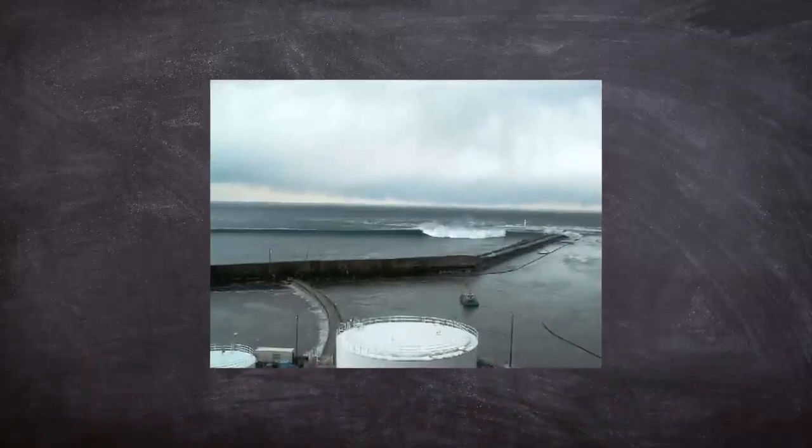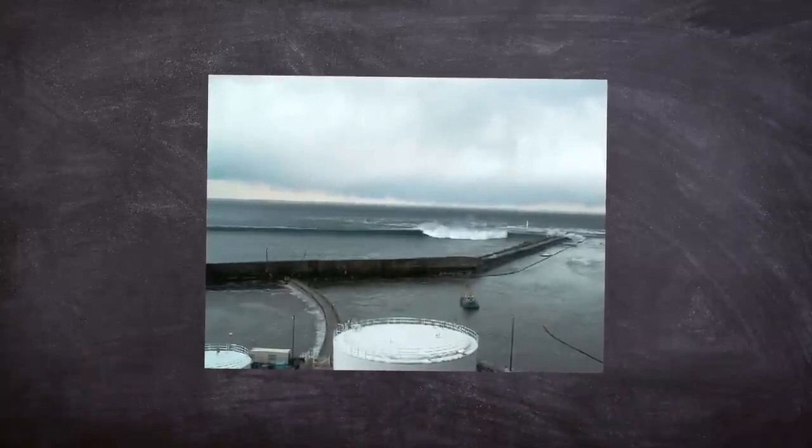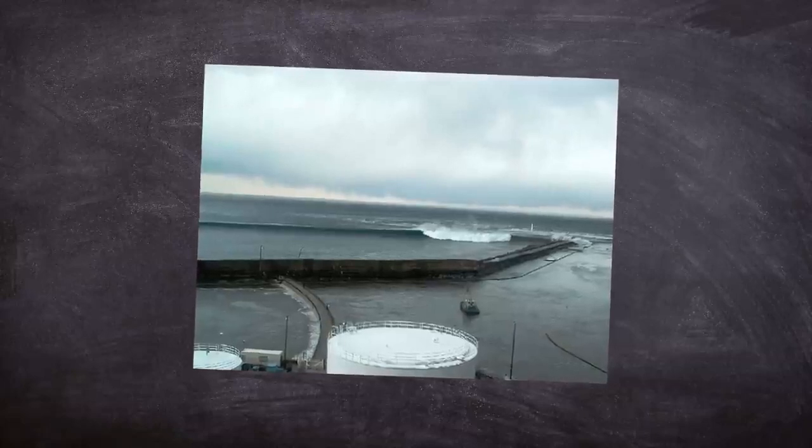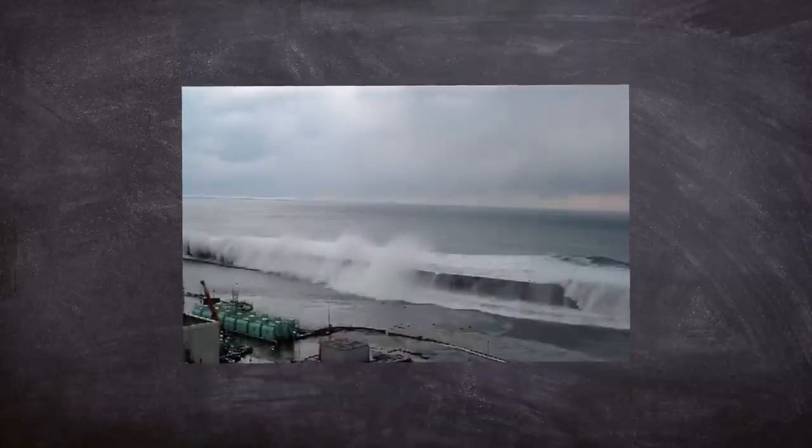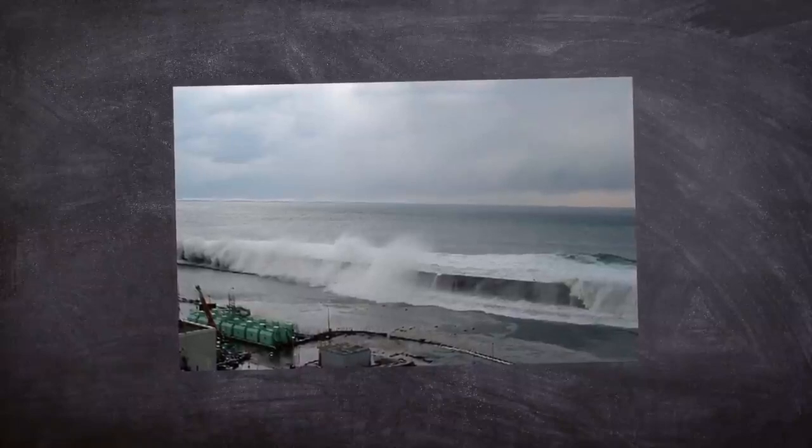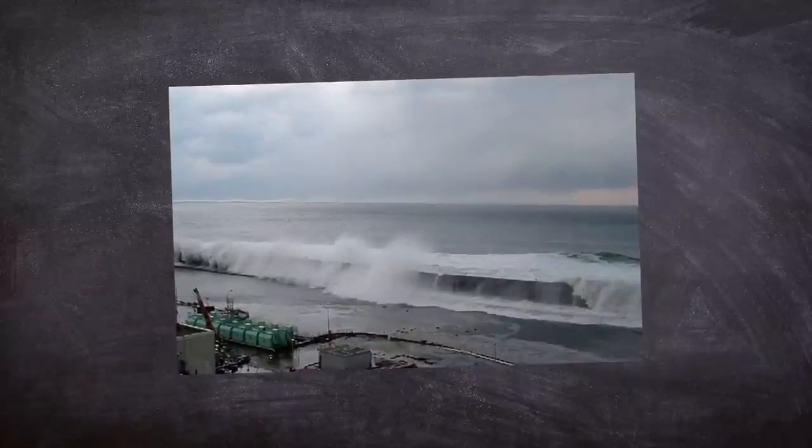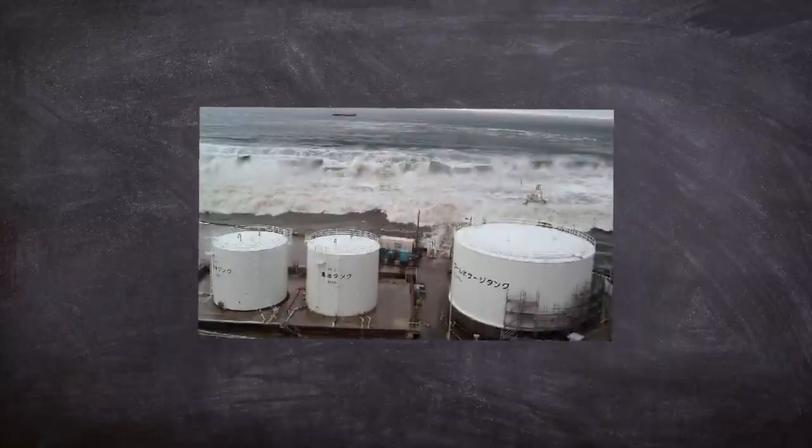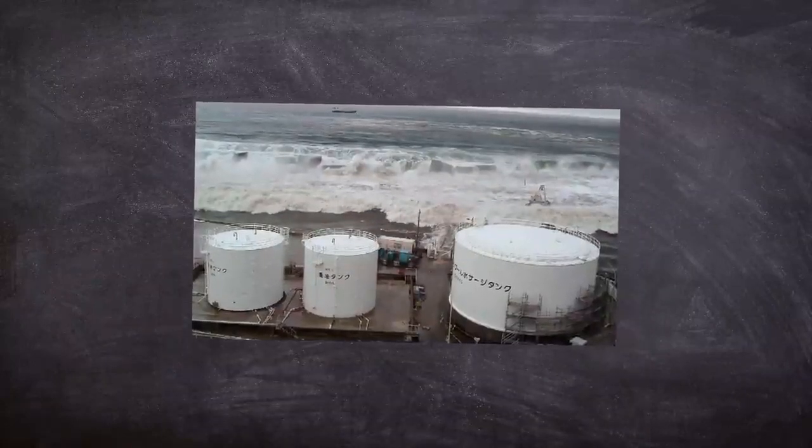If it was just an earthquake the event would have been effectively managed using the on-site generators and batteries. However, 40 minutes post-seismic activity, the first tidal wave just under five meters tall crashed up against the sea wall which effectively protected the plant. However, just 10 minutes later a second 14 meter high tsunami wave was heading for the power station. The wave effortlessly crashed over the sea wall which only provided protection of around five meters above the normal sea level.